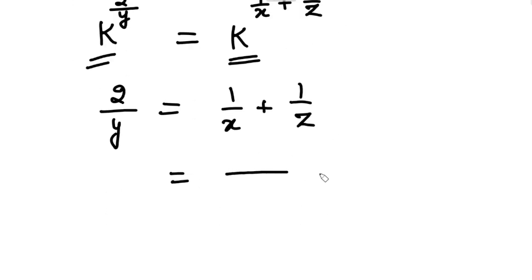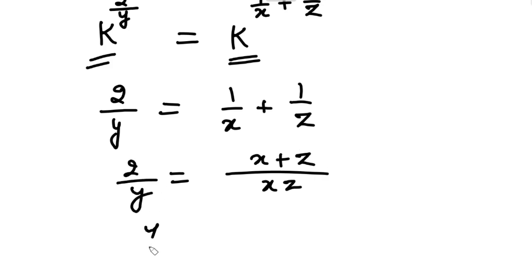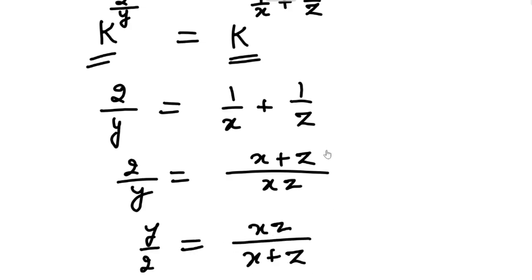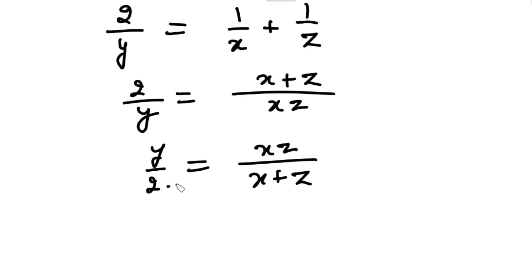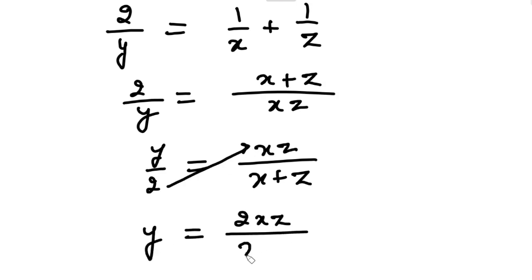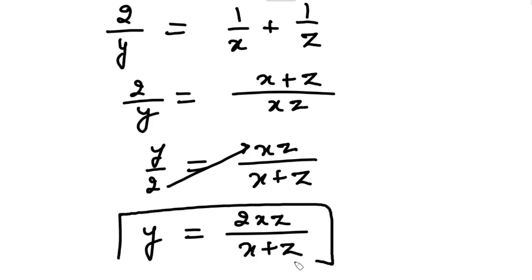Taking LCM on the left-hand side, we get Y upon 2 equals XZ upon (X plus Z) after taking reciprocals on both sides. Multiplying both sides by 2: Y equals 2XZ upon (X plus Z), and this is the relation we had to prove.